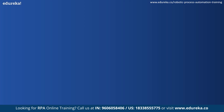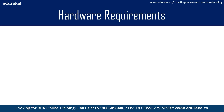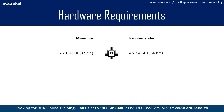Now let's look at the hardware requirements for operating UiPath. We will look at the minimum requirements as well as the recommended requirements. Starting with CPU: the minimum requirement is to have two cores of 1.8 GHz processors with 32-bit architecture. The recommendation, however, is to have four cores of 2.4 GHz processors with 64-bit architecture.